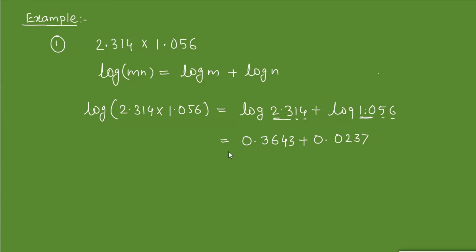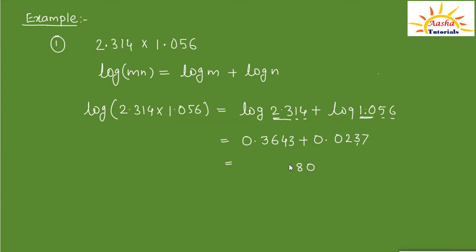Adding the two logs: 7 plus 3 gives 10, carry 1; 4 and 4 is 8; 2 and 6 is 8; and 0 and 3 is 3 at the decimal point; 0 plus 0 is 0. So the sum is 0.3880.